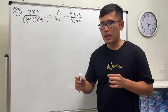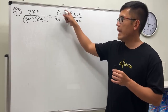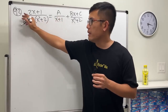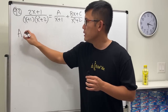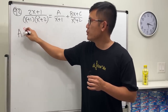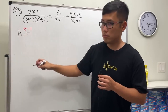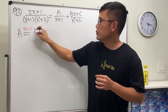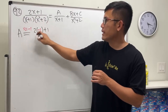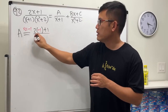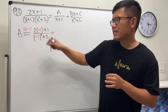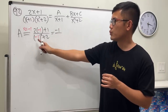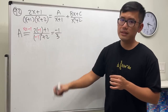Now we can do a cover-up for one of the letters, and that is a, because this denominator appears in the original and we can cover it up to make it equal to zero. For a, when x equals negative 1 — just like we did earlier — we put negative 1 here and here. We get 2 times negative 1 plus 1 over negative 1 squared plus 2. That's negative 2 plus 1, which is negative 1, over 1 plus 2, which is 3. So a is equal to negative one third.